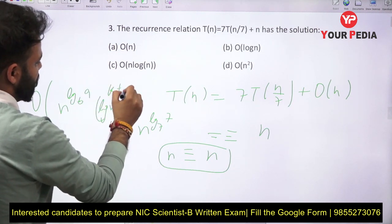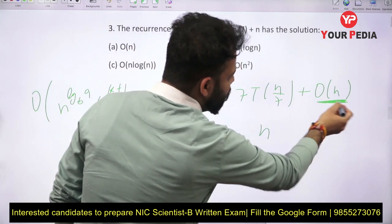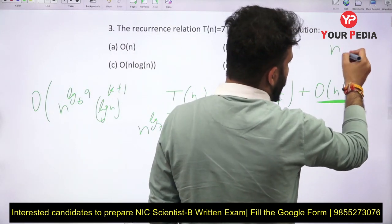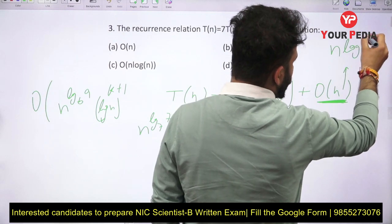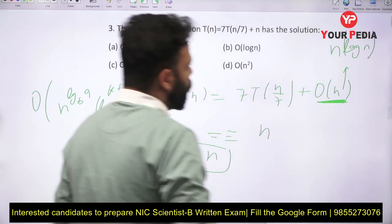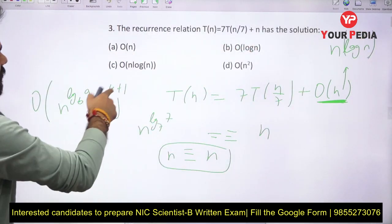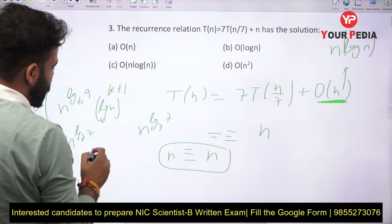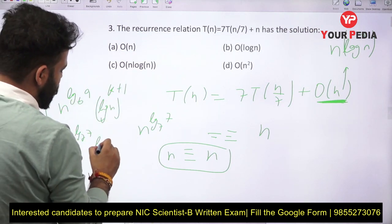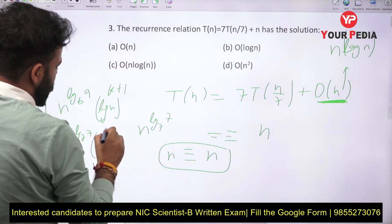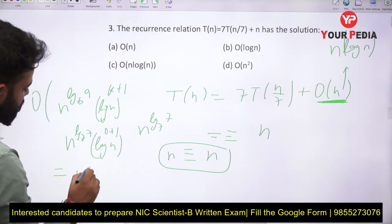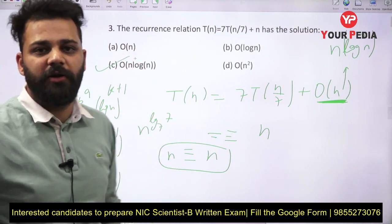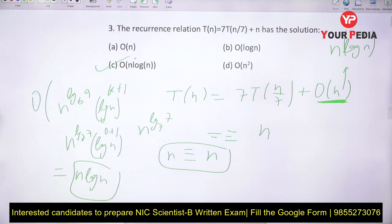For the second case of the Master Theorem, the time complexity is O(N^(log_b a) · log^(k+1) N). Since there is no extra log N factor, k equals 0, so k+1 equals 1. Therefore the time complexity is O(N^(log₇ 7) · log N) = O(N log N).